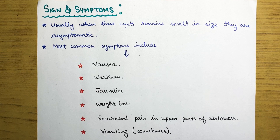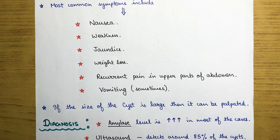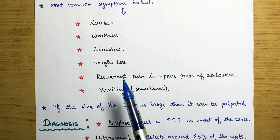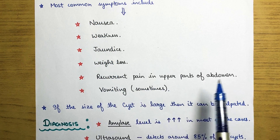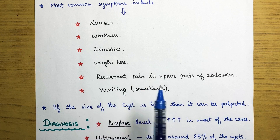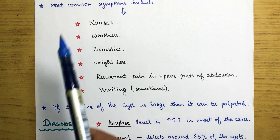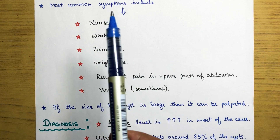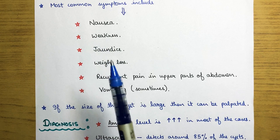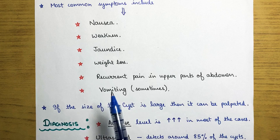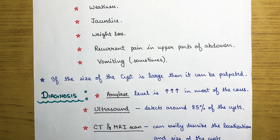The most common symptoms are nausea, weakness, jaundice, weight loss, recurrent pain in the upper part of the abdomen, and in some cases vomiting. These are the main six symptoms to look for in cases of pancreatic cysts.